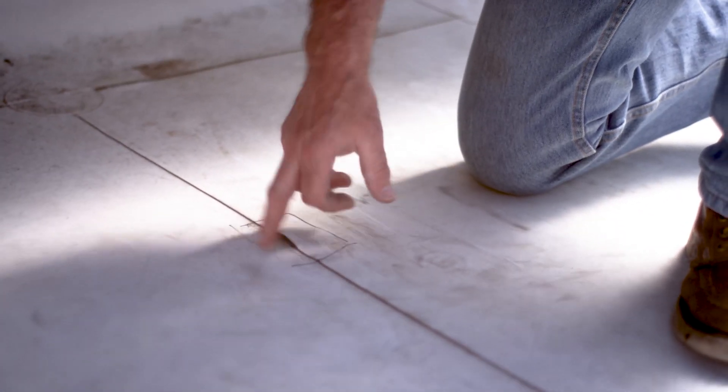Our typical T-joint patch, which is right here, probably won't be big enough to cover this, so we're gonna have to cut a bigger piece of membrane to do that patch.